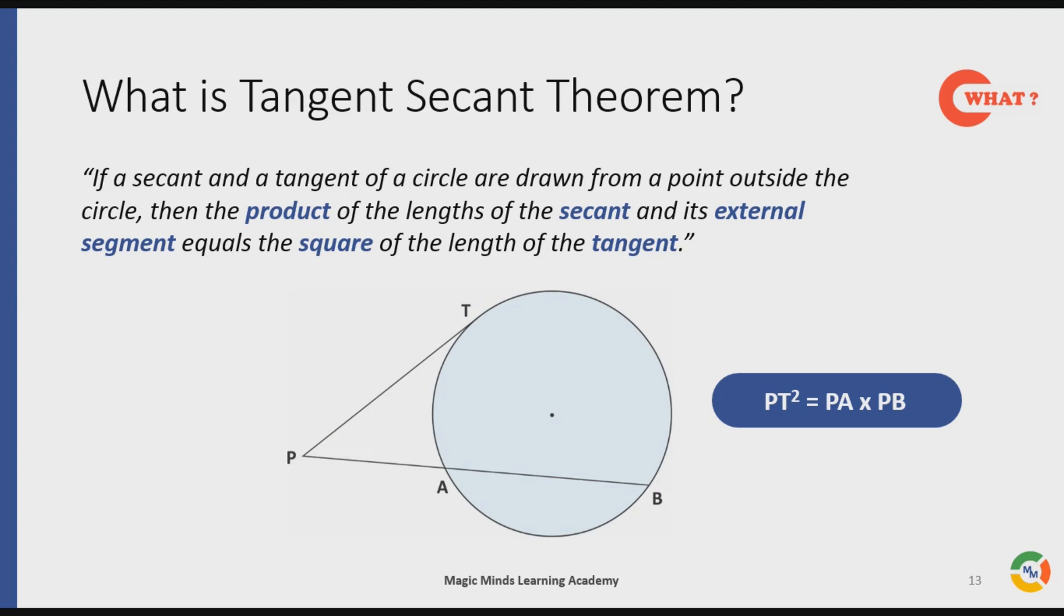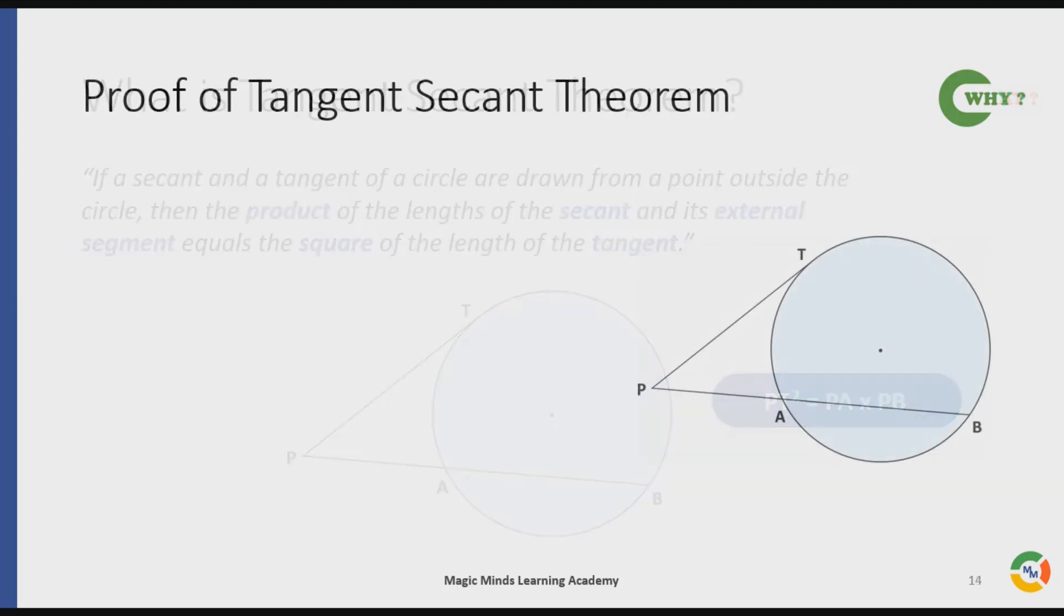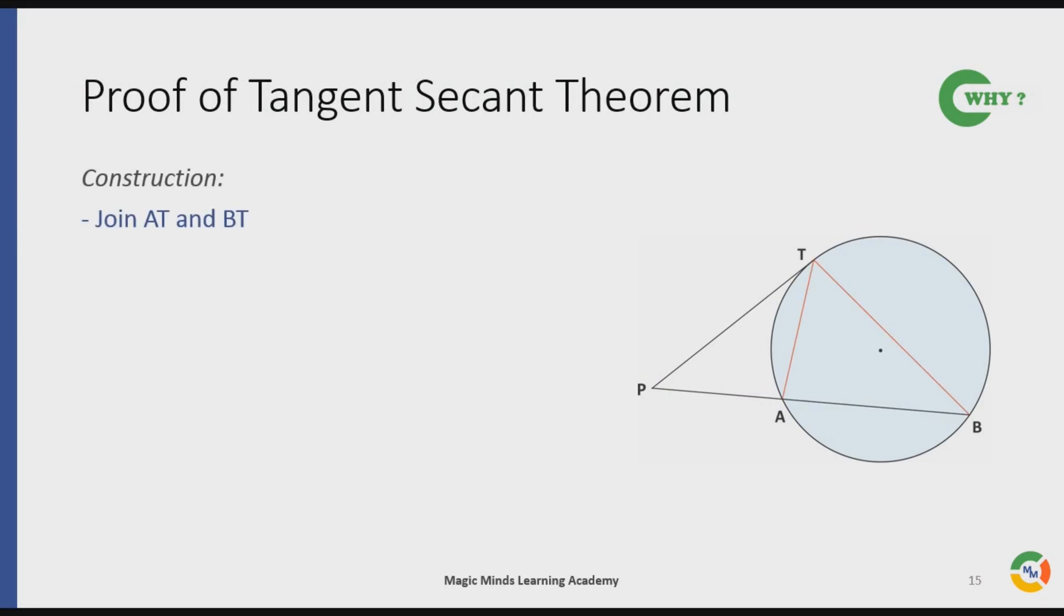We start with a small construction. We will join AT and BT. Notice that we can see two distinct triangles.